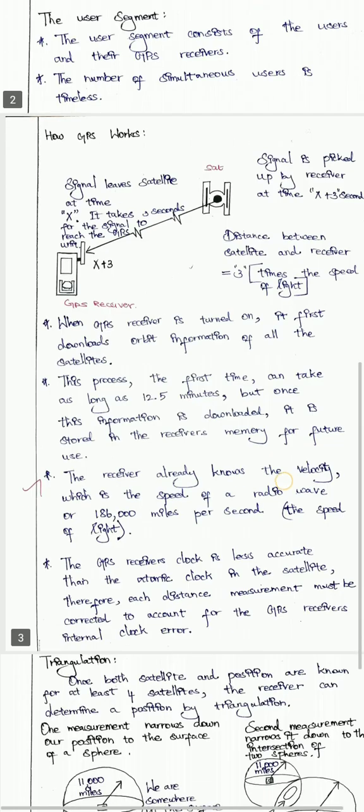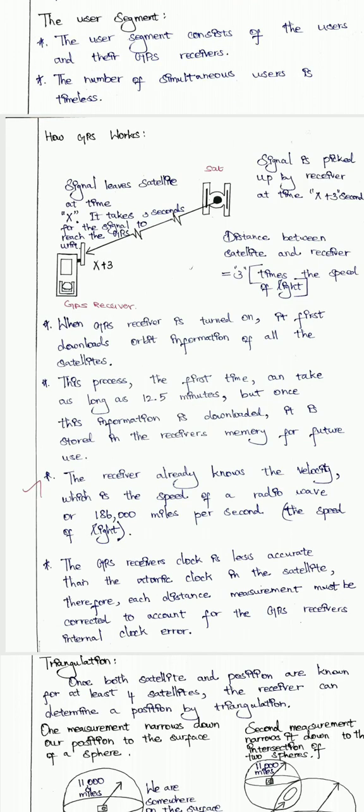How GPS works: a signal leaves the satellite at time X. It takes 3 seconds for the signal to reach the GPS unit, so the GPS unit receives the signal at time X plus 3 seconds. The distance between the satellite and receiver can be calculated as 3 times the speed of light.